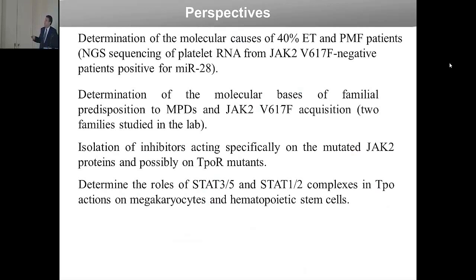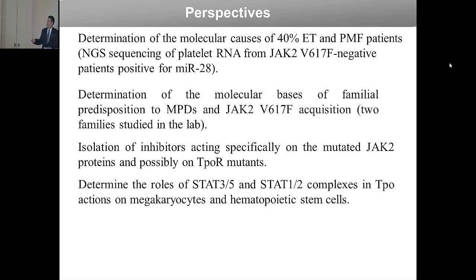To conclude, the key things we are going to pursue include: identifying the cause for the 40% of MPN patients that do not yet have a known molecular cause; studying families that acquire JAK2 V617F during their life but do not have it in the germline, suggesting predisposing germline mutations; isolating inhibitors that specifically act on mutant proteins among wild-type; and understanding how thrombopoietin regulates stem cells and megakaryocyte differentiation and how the choice of STATs really leads to this process.